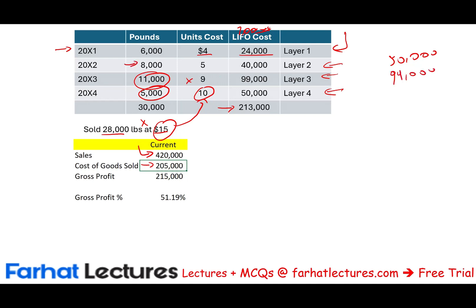The cost of goods sold breaks down as: 5,000 lbs × $10 = $50,000; 11,000 lbs × $9 = $99,000; 8,000 lbs × $5 = $40,000; and then we still need 4,000 more pounds from Layer 1: 4,000 × $4 = $16,000. Total cost of goods sold: $50,000 + $99,000 + $40,000 + $16,000 = $205,000. Gross profit is therefore $420,000 − $205,000 = $215,000.